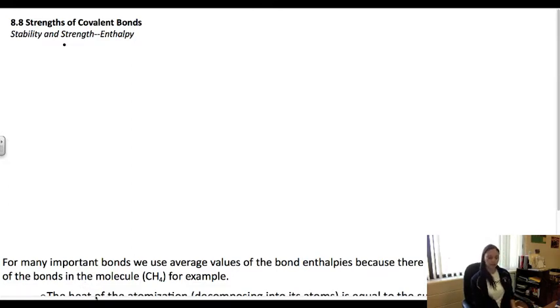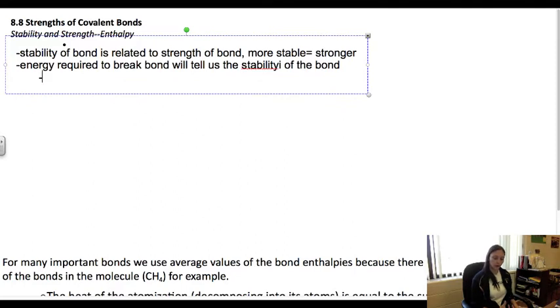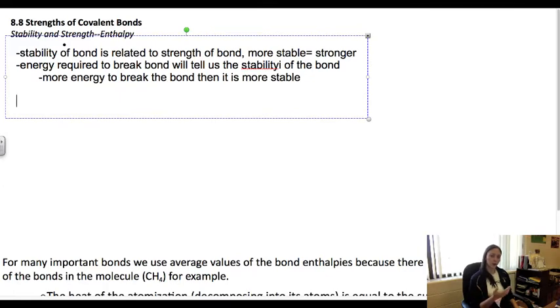The stability of a bond, how well it stays together, is related to the strength of the bond. The more stable it is, the stronger it is, because that means it doesn't want to fall apart. Remember, things that are more stable have lower energy and do not want to separate. The energy required to break the bond will tell us how stable it is. If it requires more energy to break the bond, then that means it's more stable.